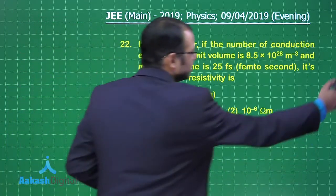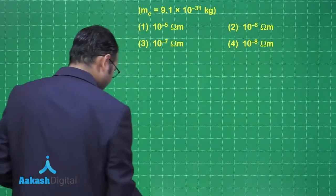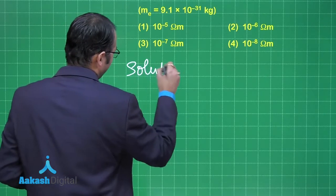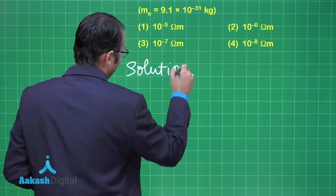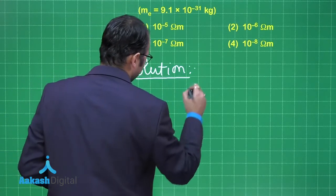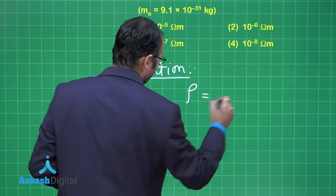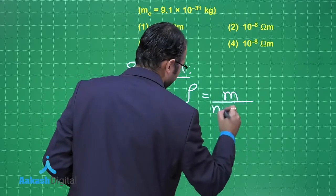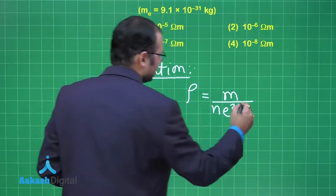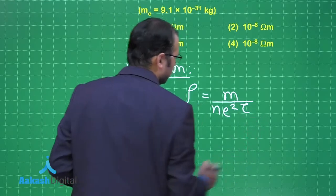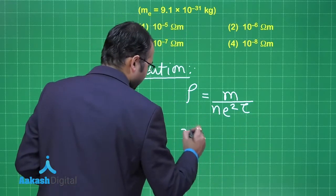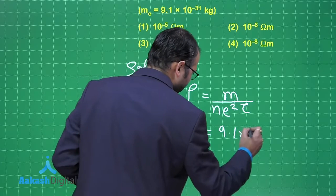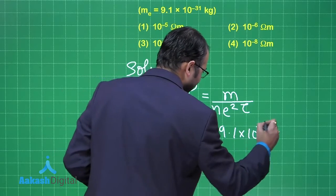There's a direct relation of resistivity with these values. The formula — I hope you remember — is: resistivity ρ equals mass of electron divided by number density into square of the charge of electron into tau. Mass of electron is given as 9.1×10⁻³¹ kg.